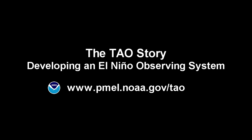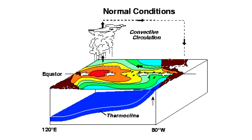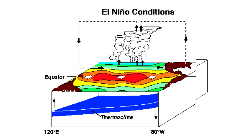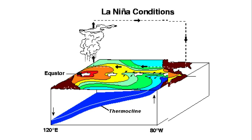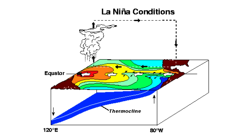The TAO Array is a major component of the El Niño Observing System. El Niño is a disturbance in the tropical Pacific characterized by unusually warm ocean temperatures, whereas La Niña is characterized by unusually cold ocean temperatures.